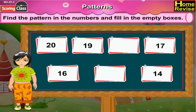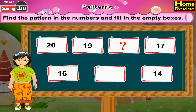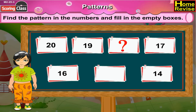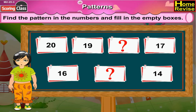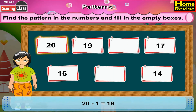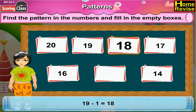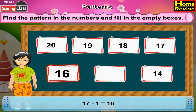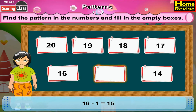The last box has 3 sevens are 21. Now the next number strip. It has 20, 19, an empty box, 17, 16, an empty box, 14. If you look at this number strip carefully, you will see that each number is decreased by 1. So after 20 you had 19. Now after 19, 19 minus 1 is 18. The next is 17, 16, then 16 minus 1 is 15, then 14.